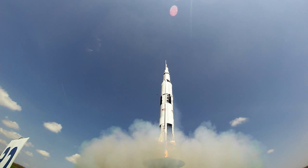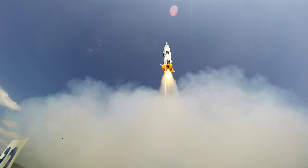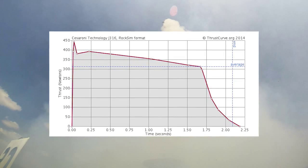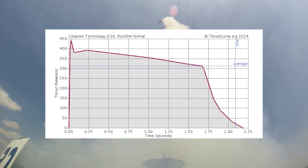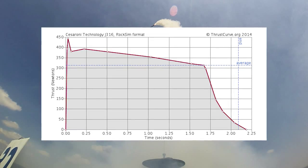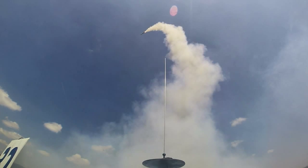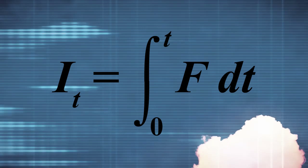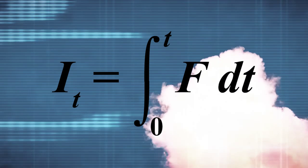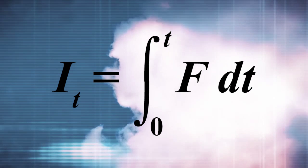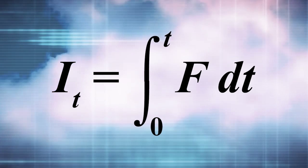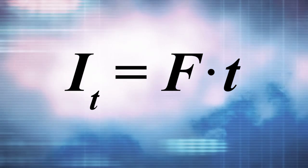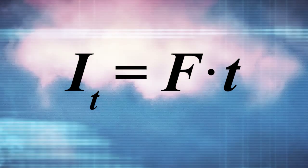Generally, the thrust of a rocket motor is not constant and changes over the course of the burn. Most hobby rocket motors start with a higher thrust and gradually taper off over the course of the burning time. Motor manufacturers provide a thrust curve — a graph that plots thrust versus burn time — so that you can see how the thrust varies during the burn. The total impulse is the total energy released by the propellant in a propulsion system. Mathematically, it is the thrust of the rocket motor integrated over the burning time, where I sub T is the total impulse, F is the thrust, and T is the burning time. If you assume that thrust is constant, you can simplify the equation and multiply the constant thrust by the burn time.